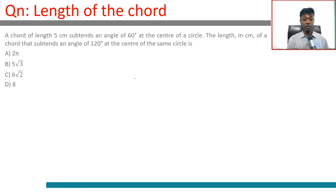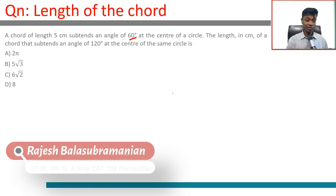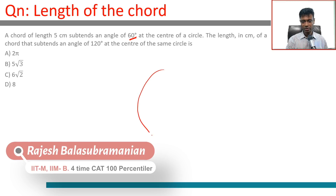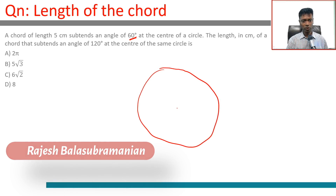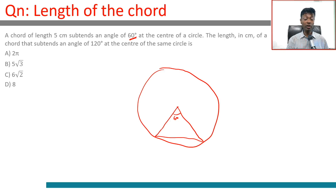A chord of length 5 centimeters subtends an angle of 60 degrees at the center of a circle. I love this question because I know this number straight away. Think about this: a chord making a 60-degree angle at the center — these two sides are radii, so they are equal.